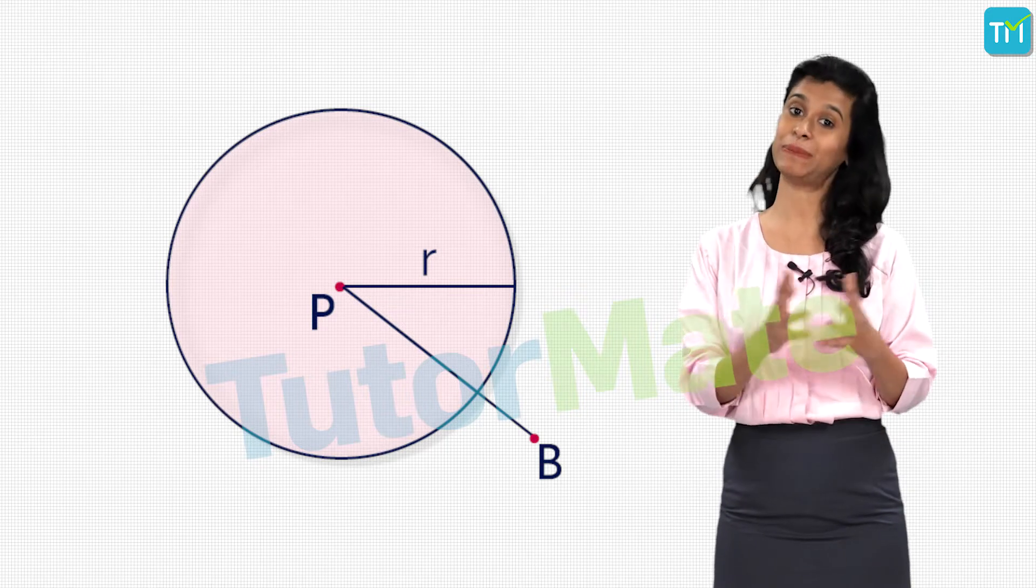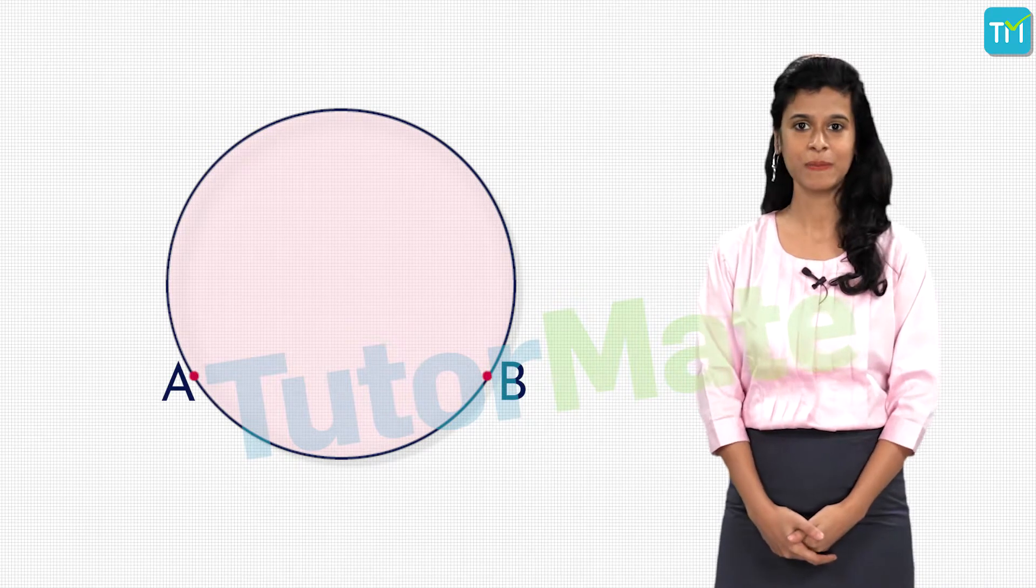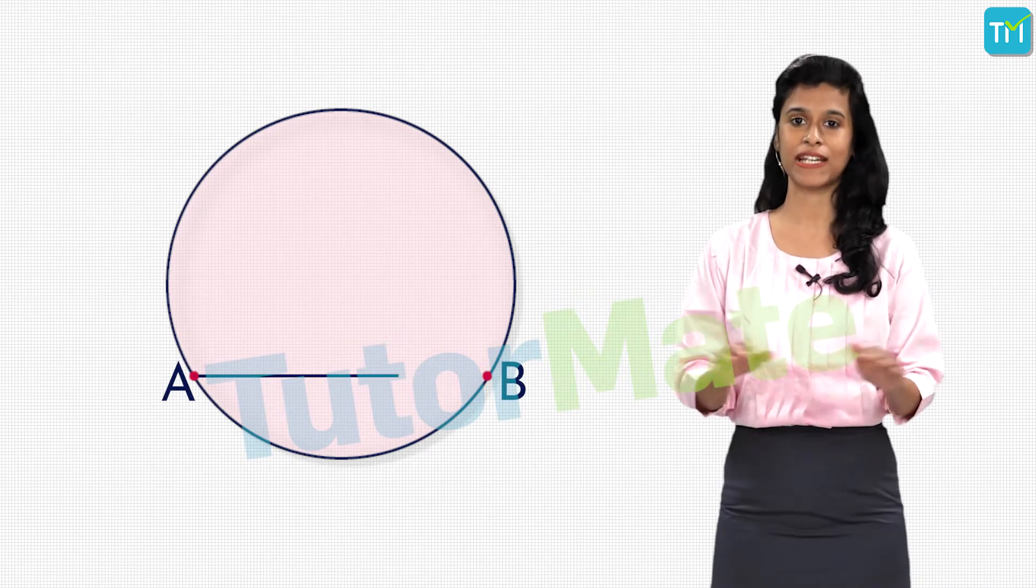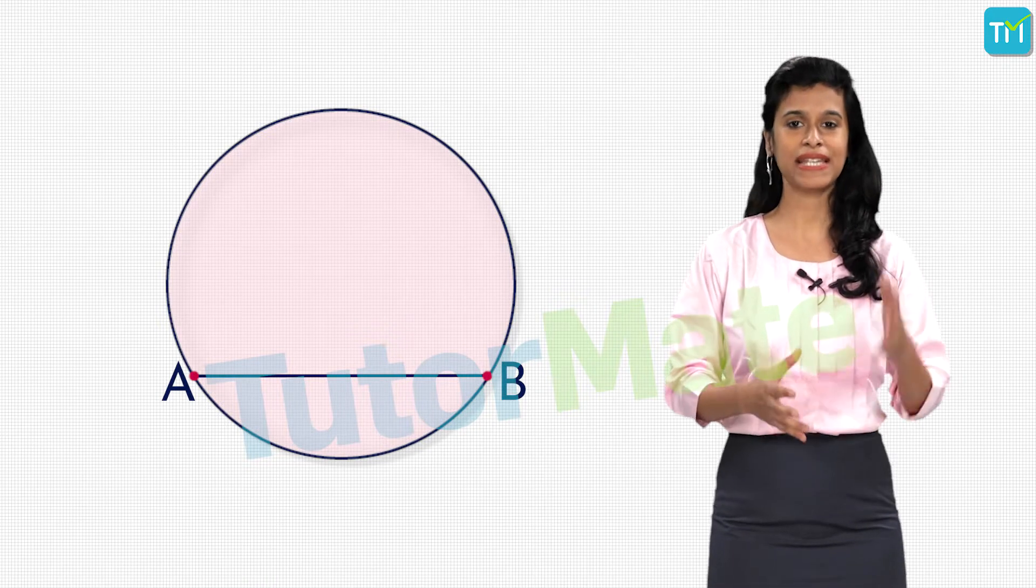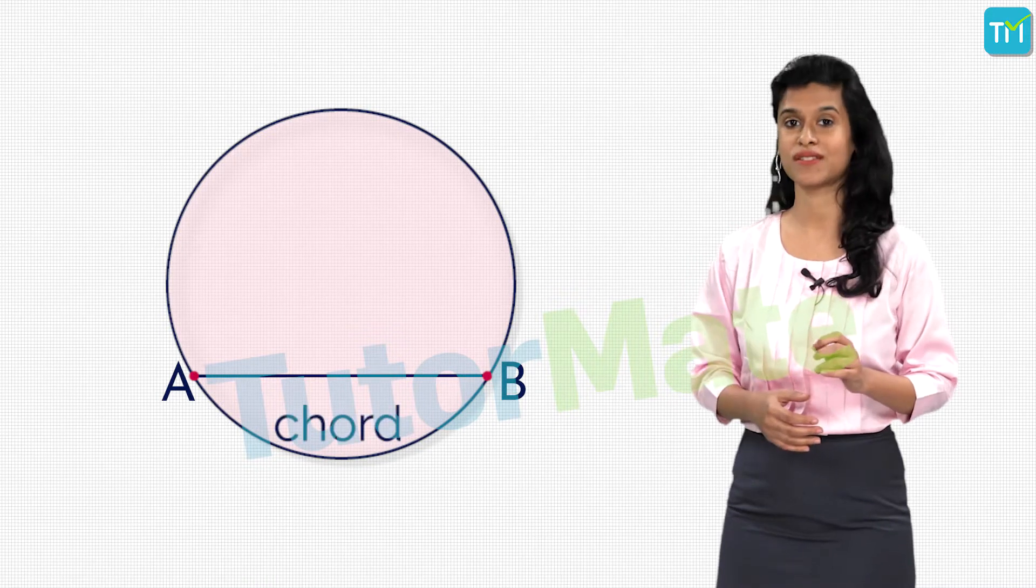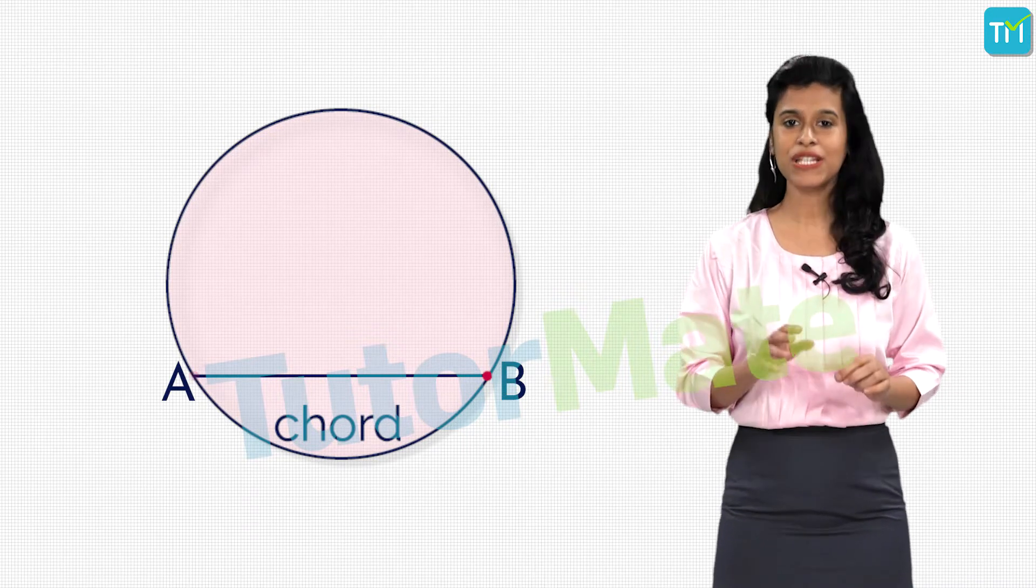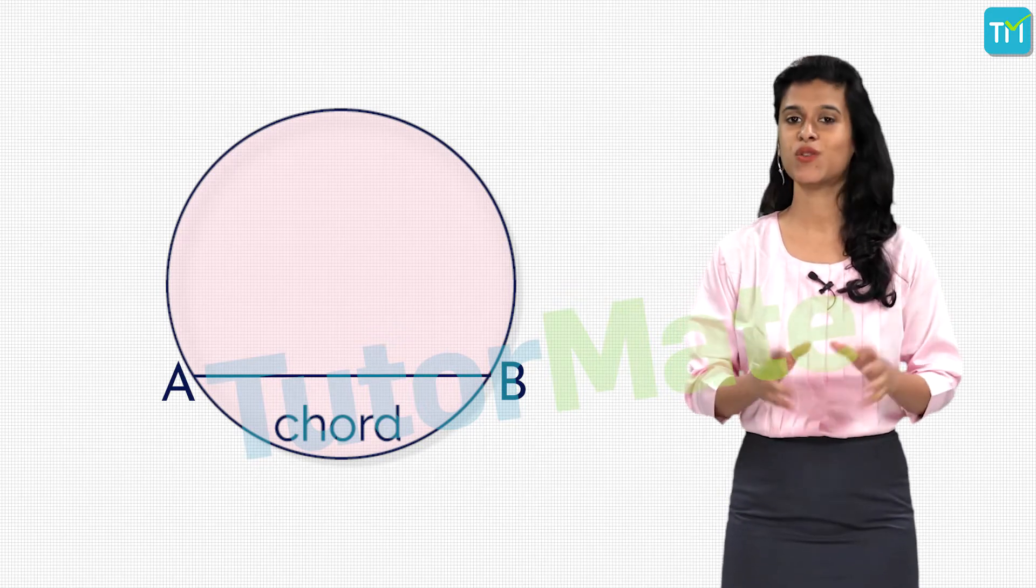Now let's take any two points A and B on the circle and join AB in a straight line. The line segment AB that we get here is called the chord of the circle. Basically, the line segment we get by joining any two points on the circle is known as a chord.